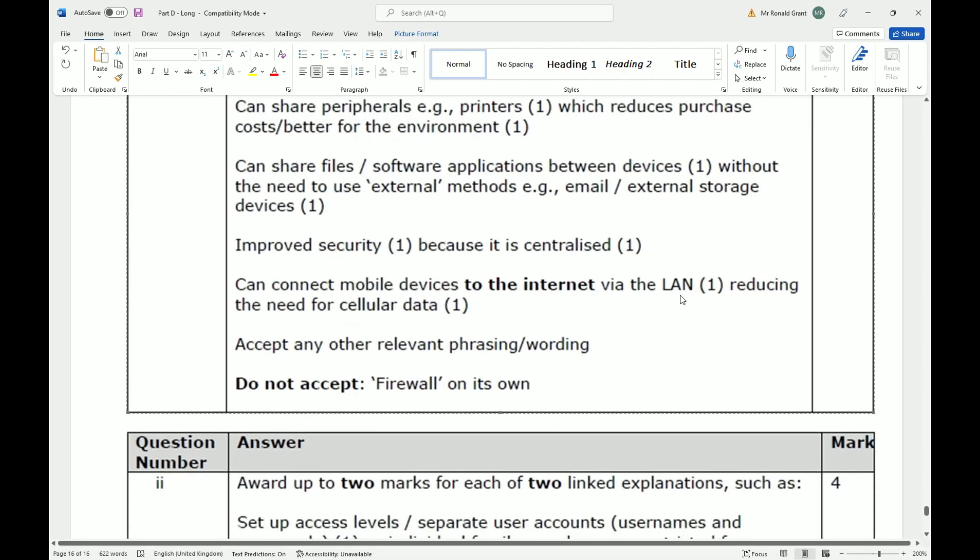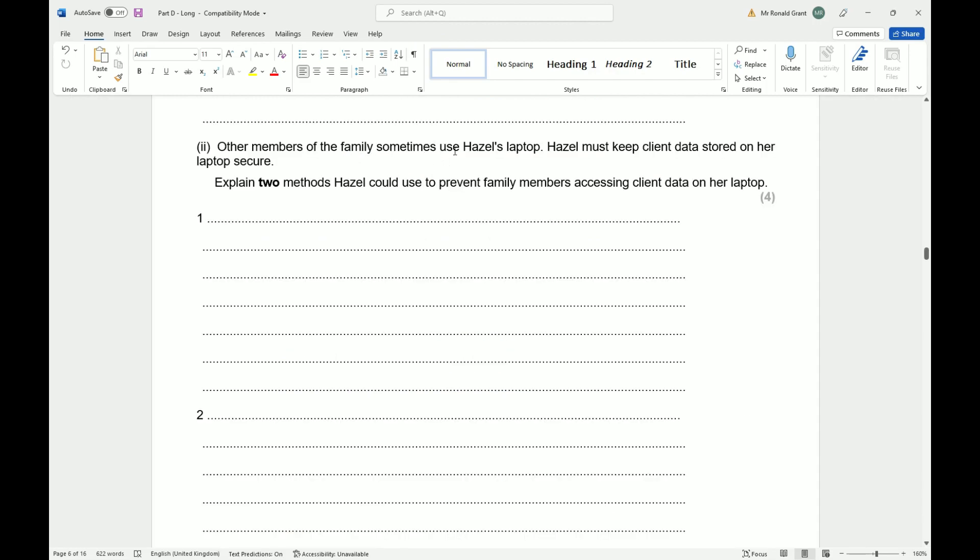Do not accept 'firewall' on its own. Other members of the family sometimes use Hazel's laptop. Hazel must keep client data stored on her laptop secure. Explain two methods Hazel could use to prevent family members accessing client data on her laptop. Now they've made it clear that sometimes people use it, so we have to stick within that realm. If they said people are not supposed to use it, then we can start thinking of physical methods like locking it in a cupboard or having a password on the account. But they've said people can or should be able to use it.